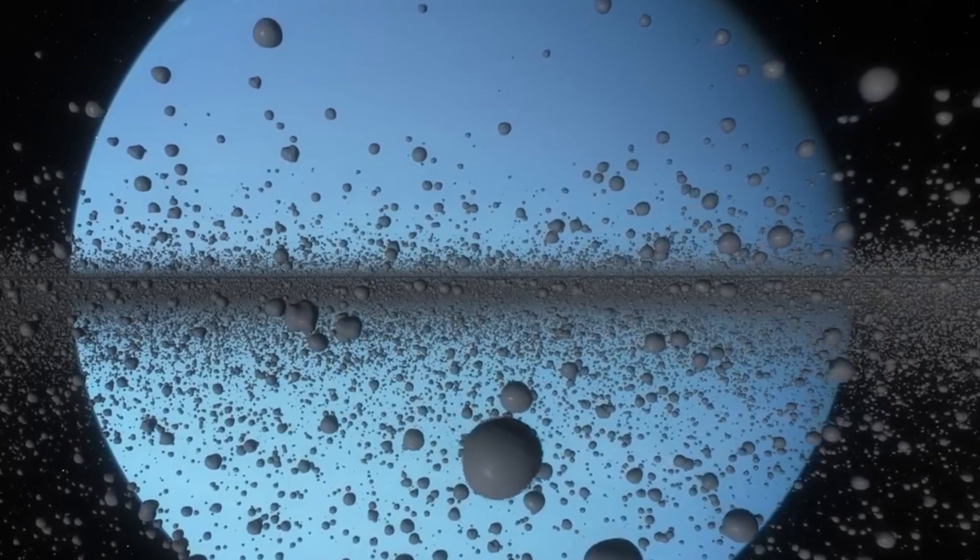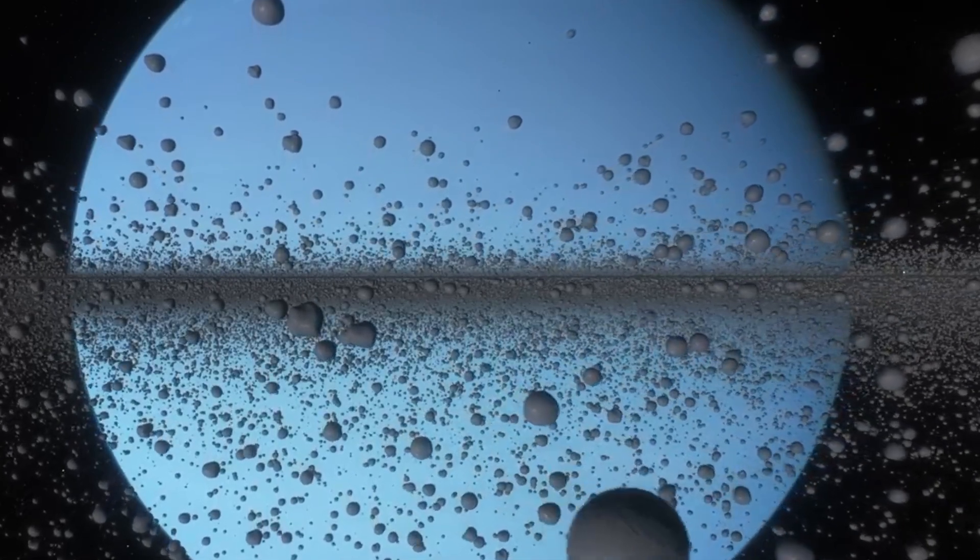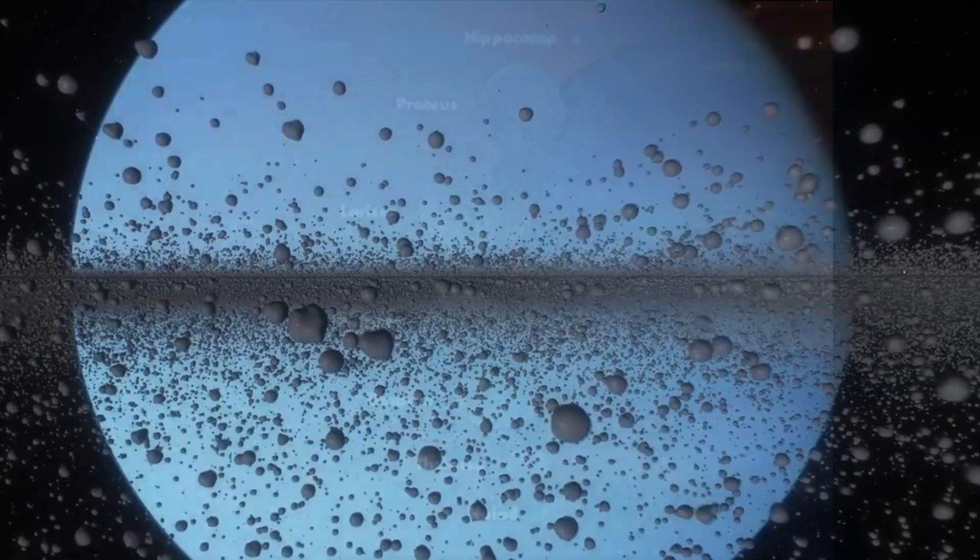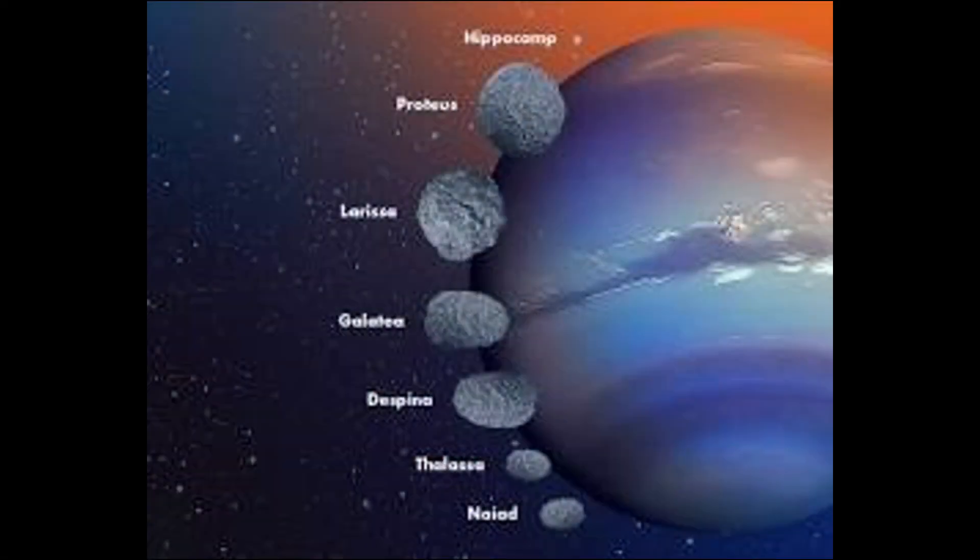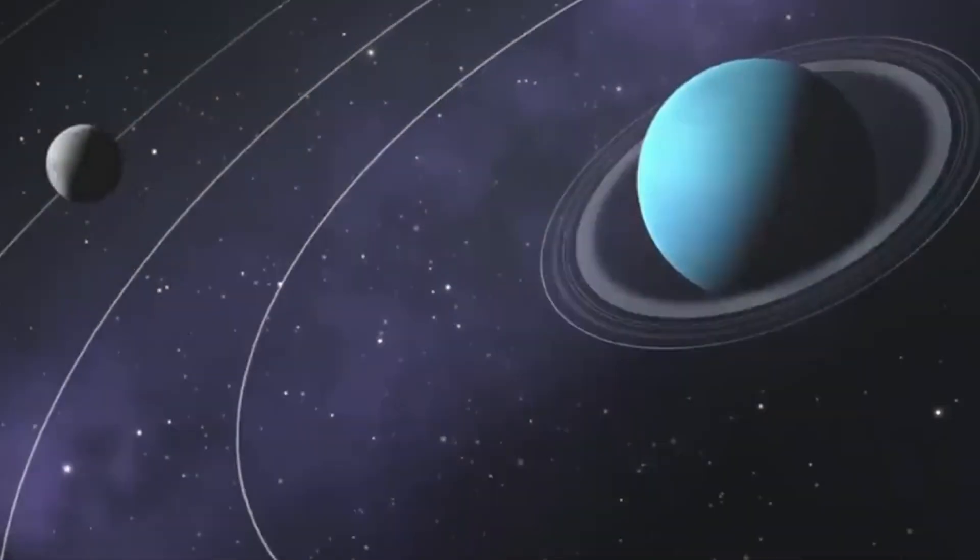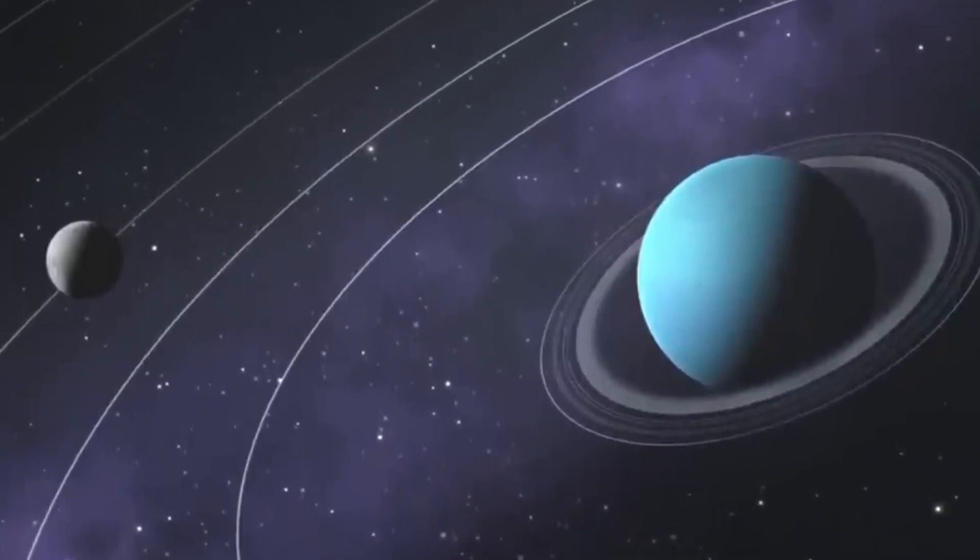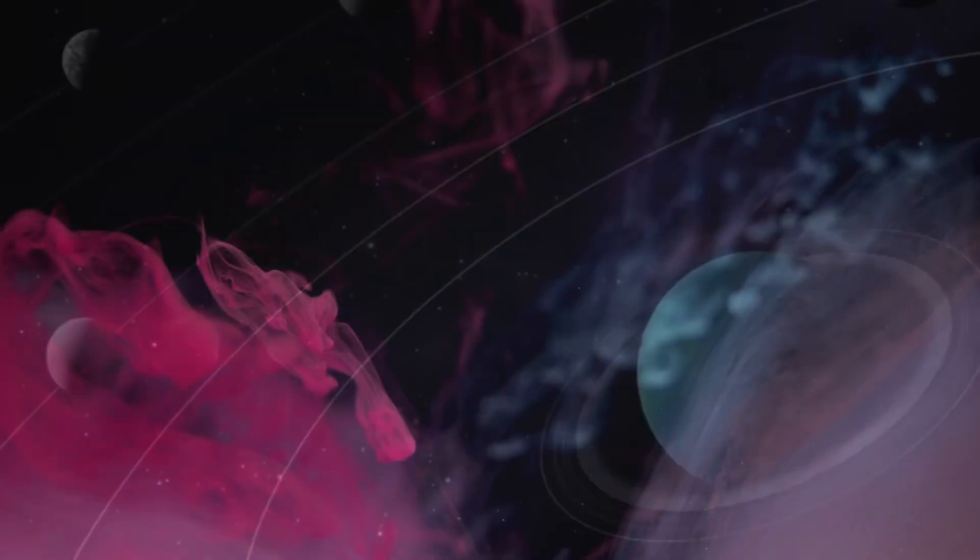It also sports a set of faint, narrow rings. While not as showy as Saturn's, these rings are made up of dust particles and ice, adding to the planet's ethereal charm. Neptune has 14 moons, but Triton is its largest moon. It orbits the planet in a retrograde motion, hinting at a captivating past. It's one of the few geologically active bodies in the outer solar system.